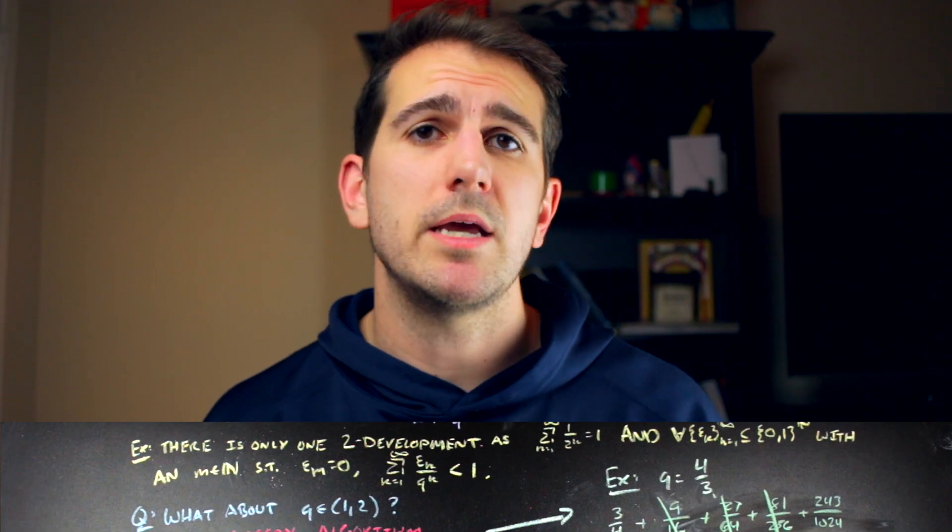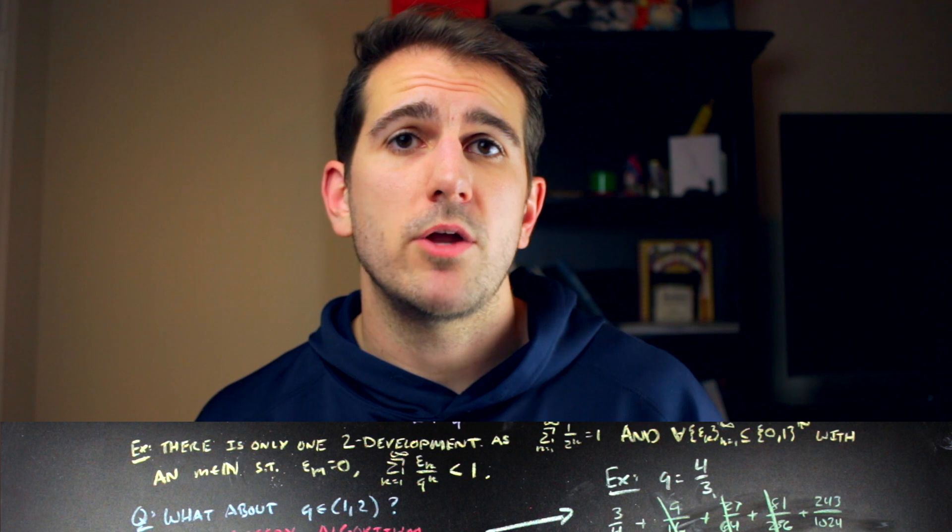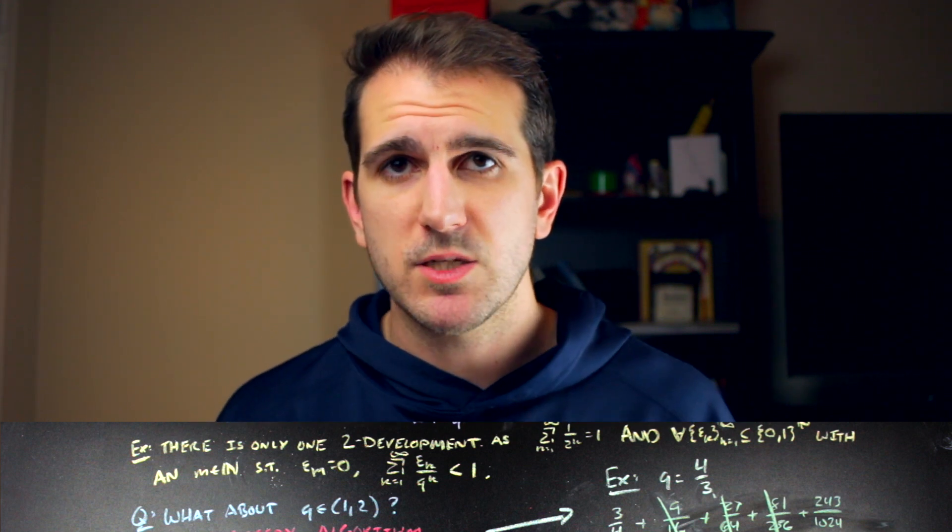Returning to the q equal to 2 case, we know there are some q where you get exactly one q-development — exactly one way of expressing 1 with 0s and 1s. Because there exist numbers like 2 where you get exactly one q-development, you can ask: what's the smallest number where 1 has a unique expansion? In 1998, Vilmos Komornik and Paolo Loretti answered this question. One of the major tools they used was a relationship between values of q giving unique q-developments and the digits in those developments — particularly how those digit sequences are related by lexicographical order, and how the greedy algorithm maps a choice of q to a particular digit sequence.